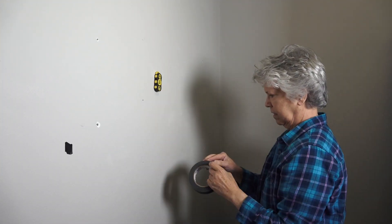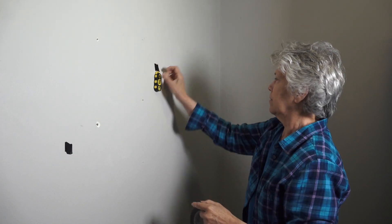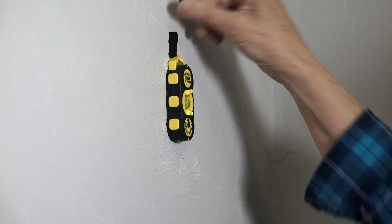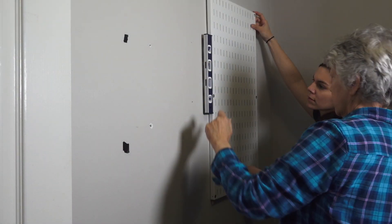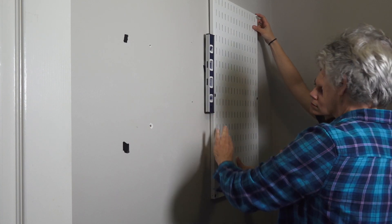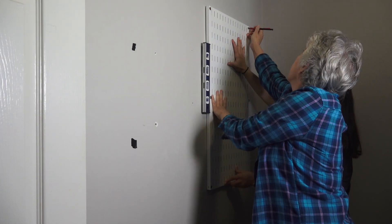Back in the laundry room, we started by finding the studs in the wall. Here we're using a magnetic stud finder and marked the stud locations with tape. It's ideal to place the panels on studs, but they include wall anchors if that's not possible. We held up the first panel and made sure it started on a stud and marked the hole locations.